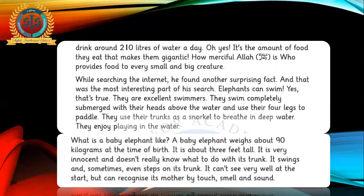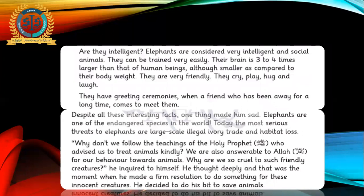What is a baby elephant like? A baby elephant weighs about 90 kilograms at the time of birth. It is about three feet tall. It is very innocent and doesn't really know what to do with its trunk. It swings and sometimes even steps on its trunk. It can't see very well at the start, but can recognize its mother by touch, smell and sound. Are they intelligent? Elephants are considered very intelligent and social animals. They can be trained very easily.